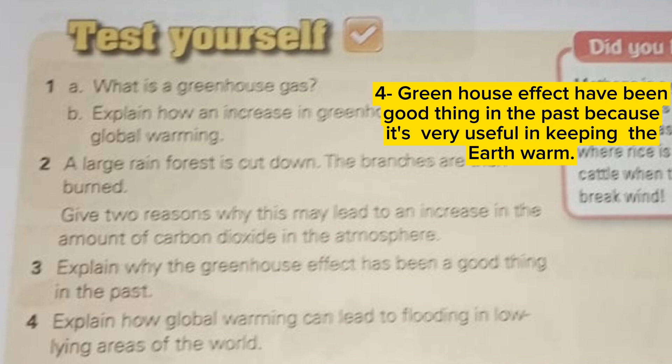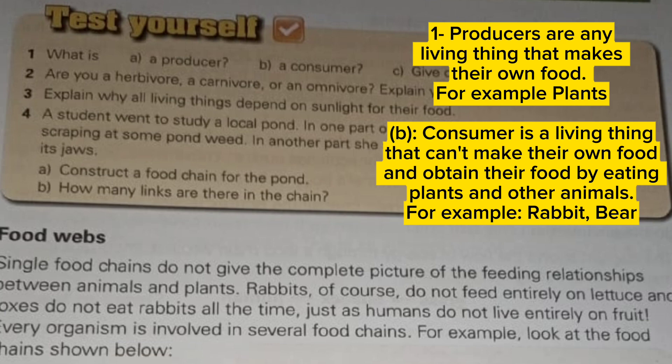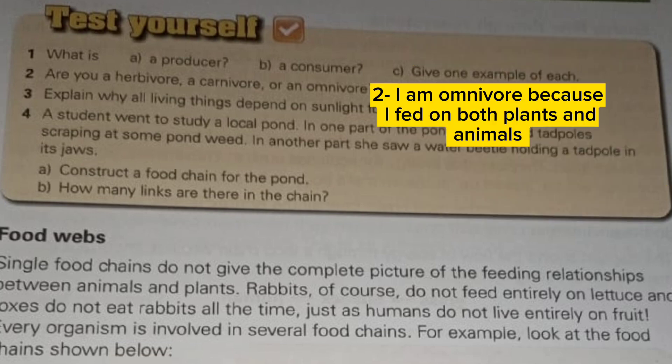The greenhouse effect has been a good thing in the past because it is very useful in keeping the Earth warm. Producers are any living things that make their own food, for example plants. A consumer is a living thing that cannot make its own food and obtains food by eating plants and other animals, for example rabbit and bear.